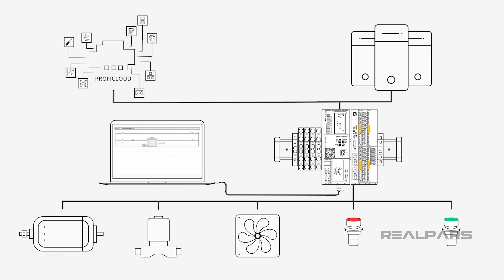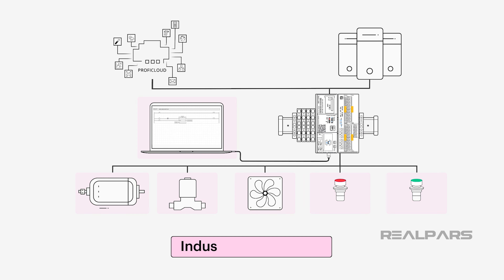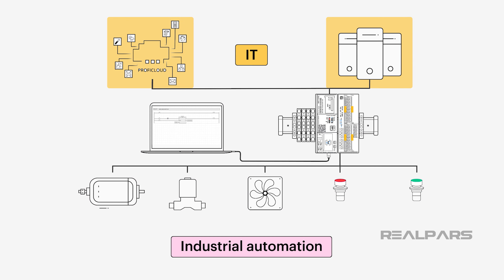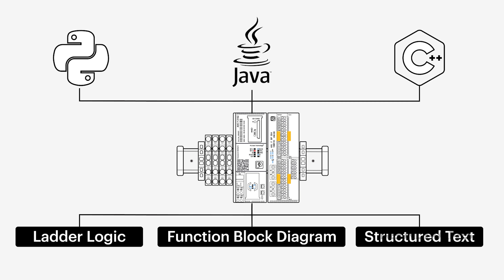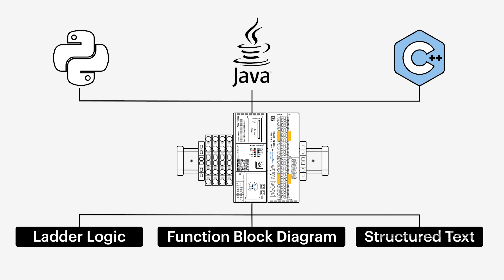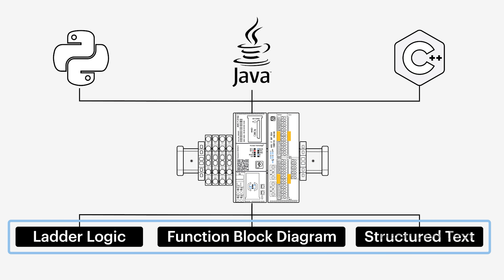The power and flexibility of PLCnext Technology are instrumental in connecting the industrial automation world to the IT world. Using PLCnext Technology plugins and tools, higher-level languages such as C++ can be utilized and can work together with IEC 61131-3 languages such as ladder logic.